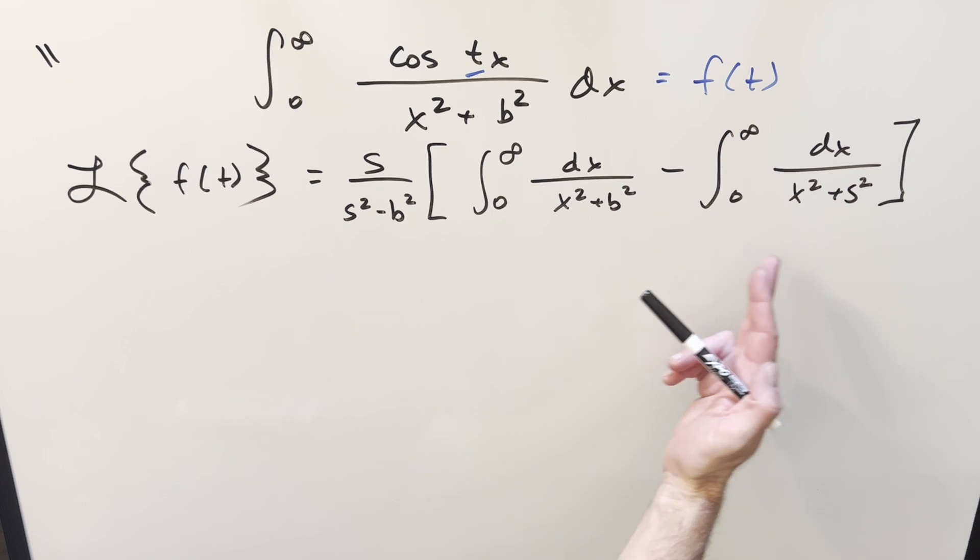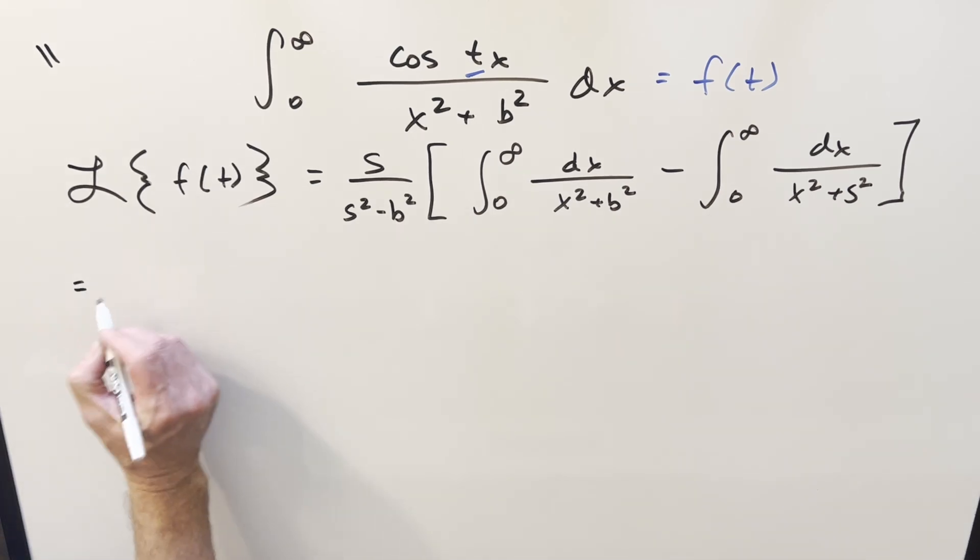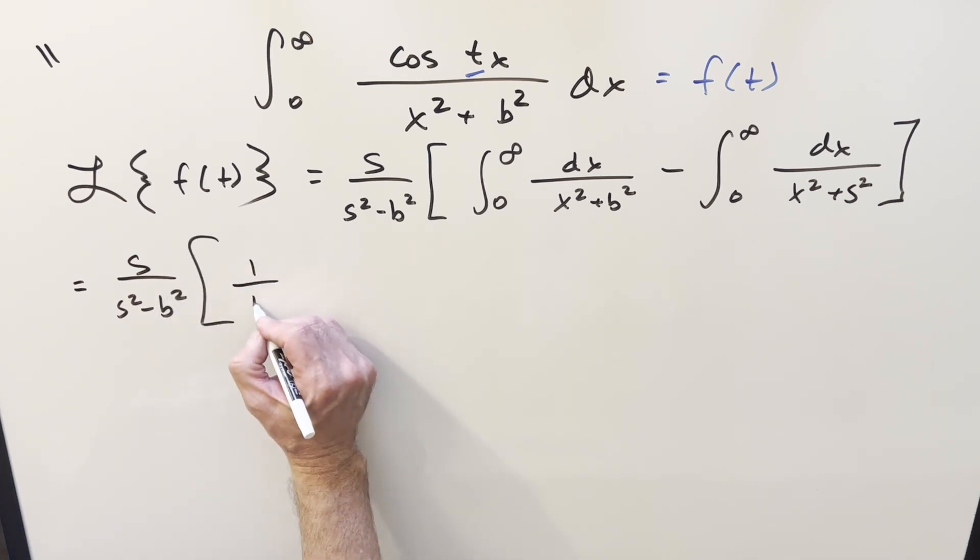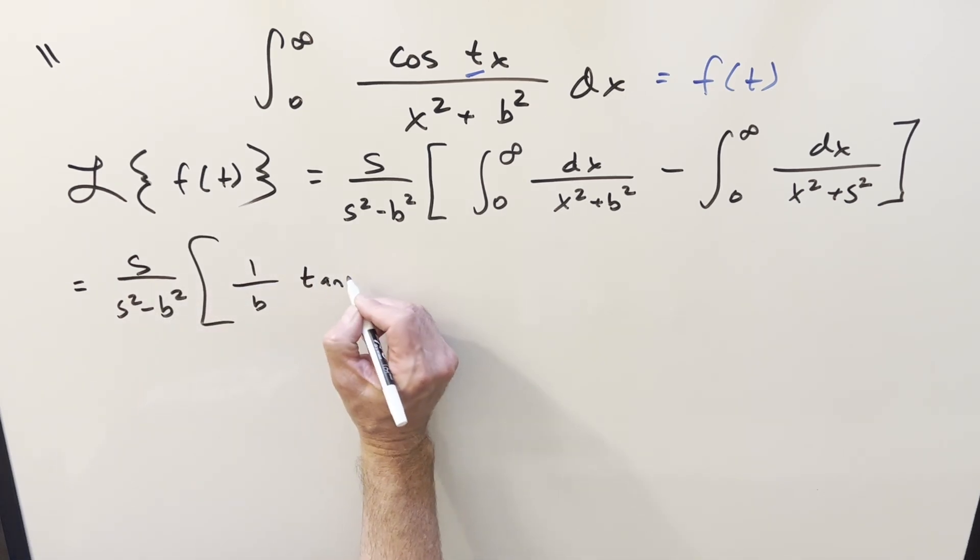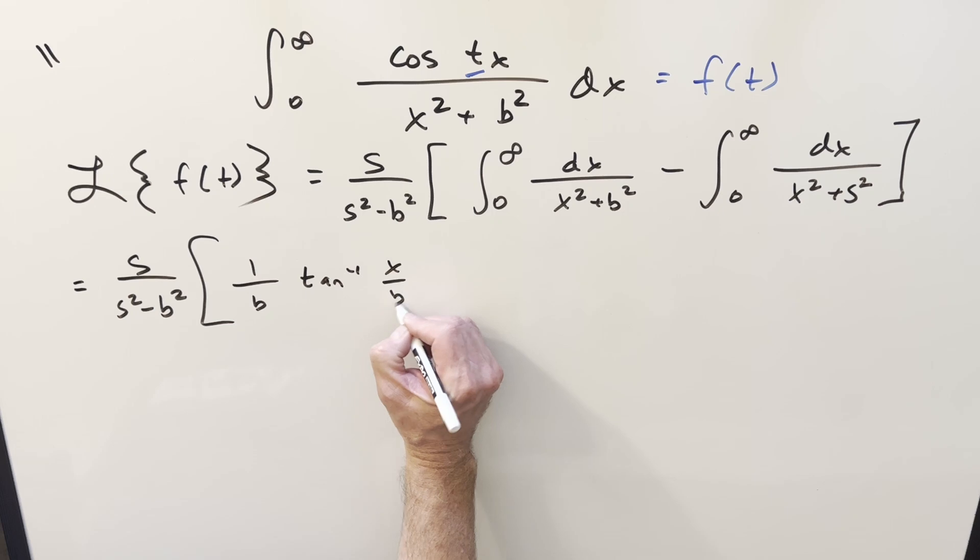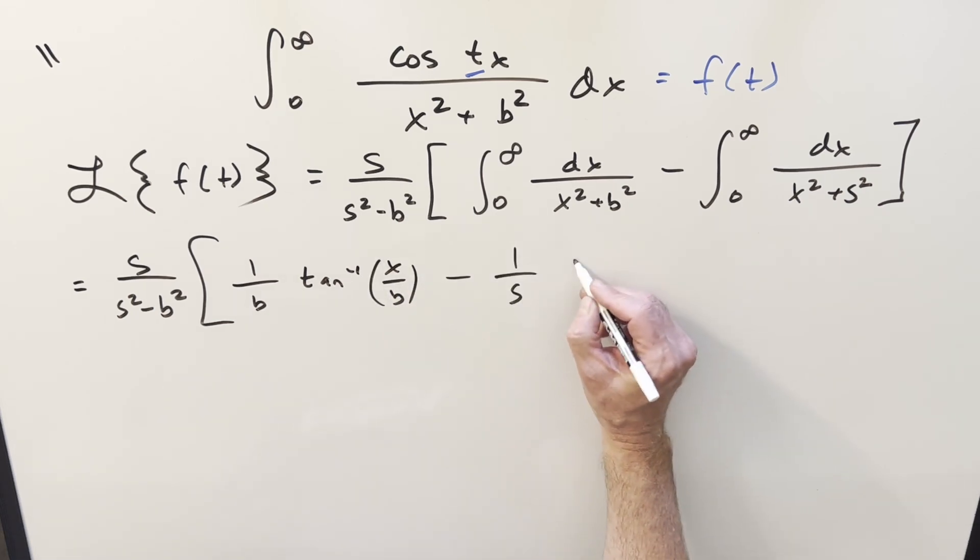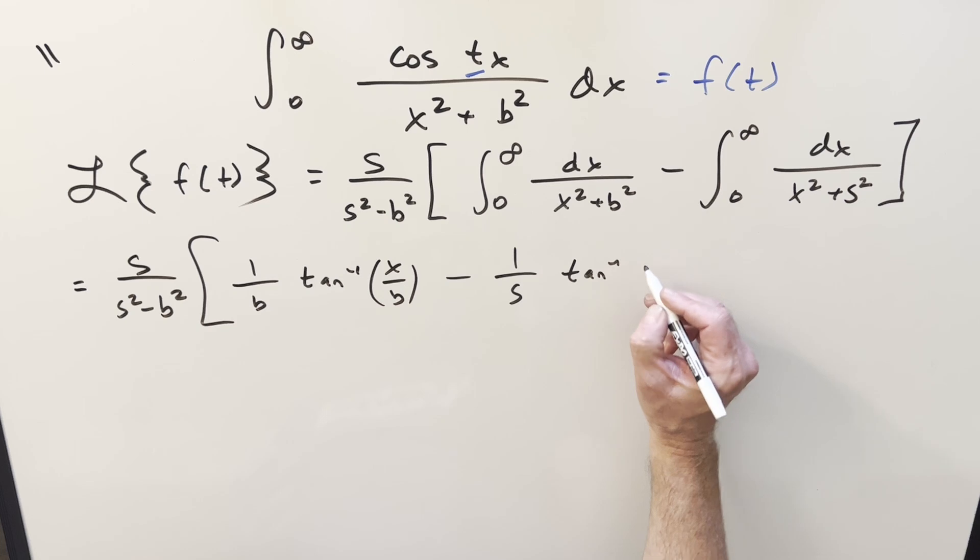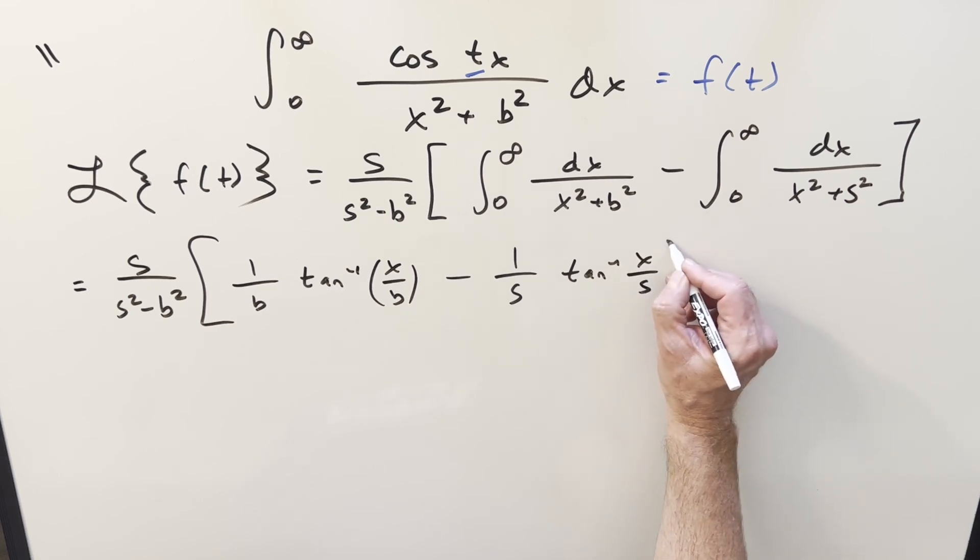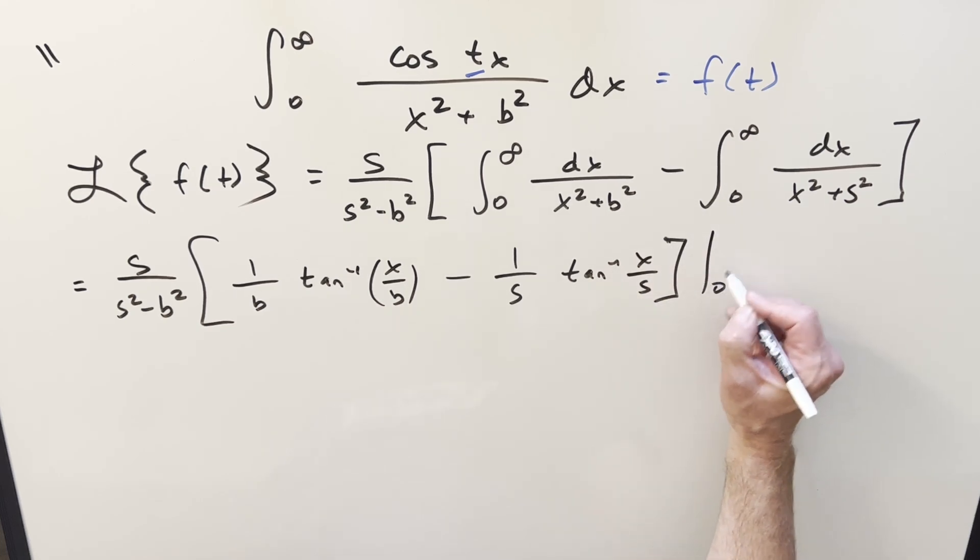From here, we basically have the same exact integral with just a different constant, b and s. So to do this, we just use our arctan formula on it. For this first one, it's going to be 1 over b, arctan x over b. And I'll just evaluate these together. Same formula on this one. 1 over s, arctan x over s. And for all this, we're evaluating from 0 to infinity.